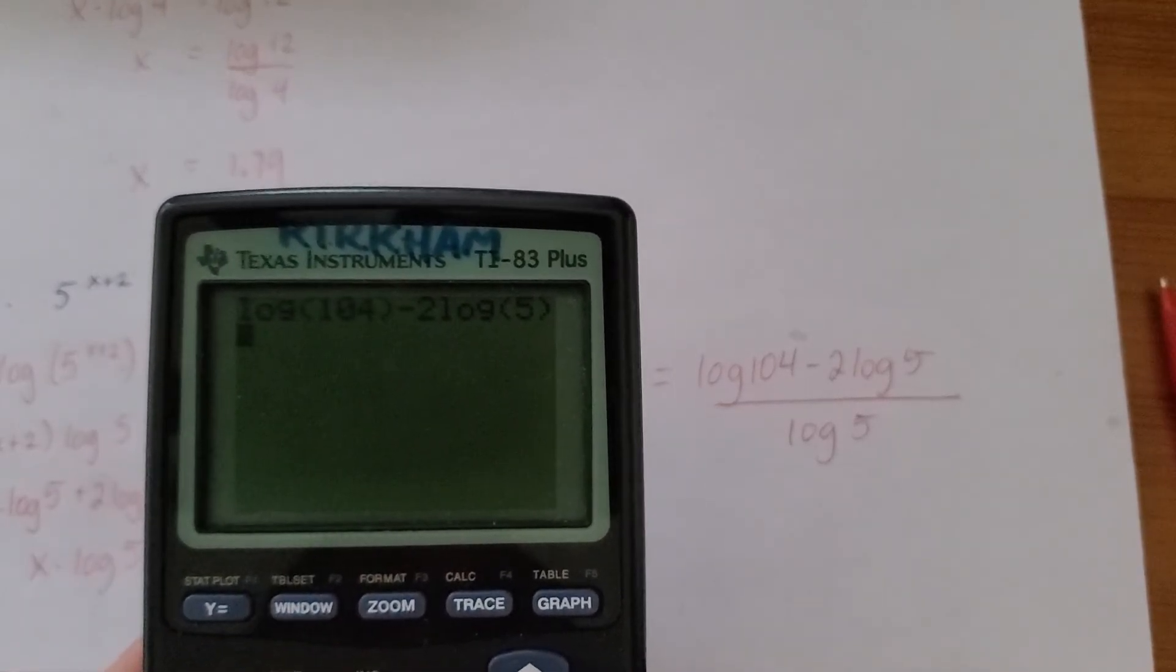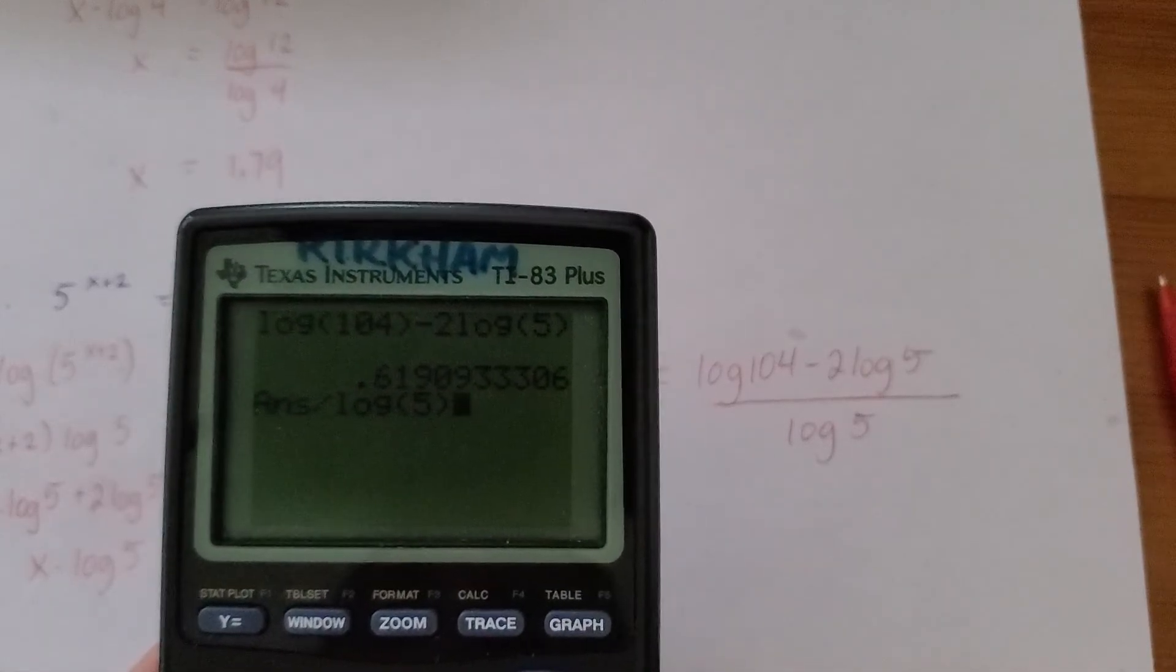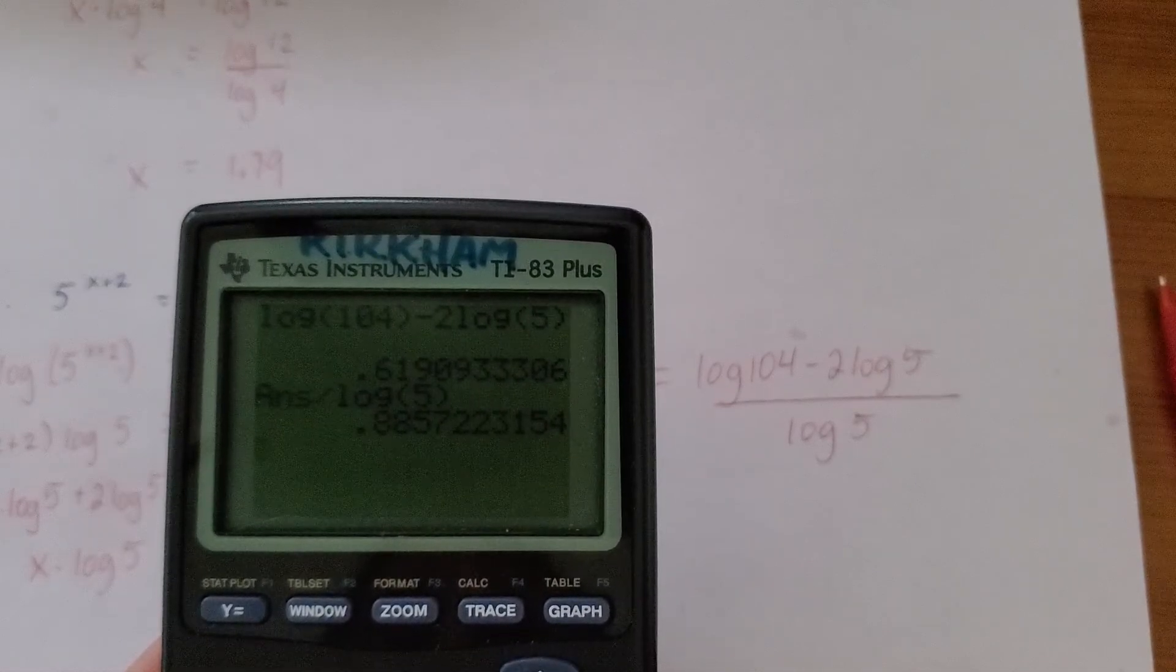We'll still write it down. So we'll do log 104 minus 2 log 5. I'm going to press enter here because if I just divide by log 5, it wouldn't work. The order of operations would mess it up. So I get an answer of 0.89.